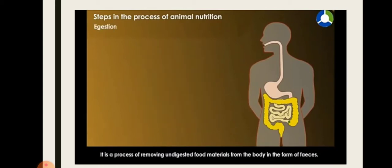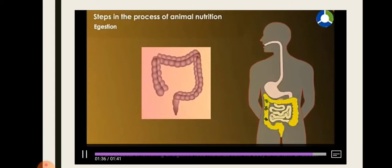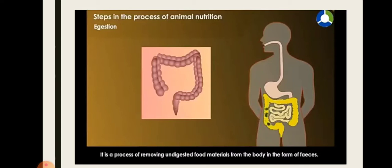The last step is egestion. It is the process of removing undigested food material out of our body. It is also commonly known as excretion. All the undigested food material is thrown out of the body, and that is known as egestion.